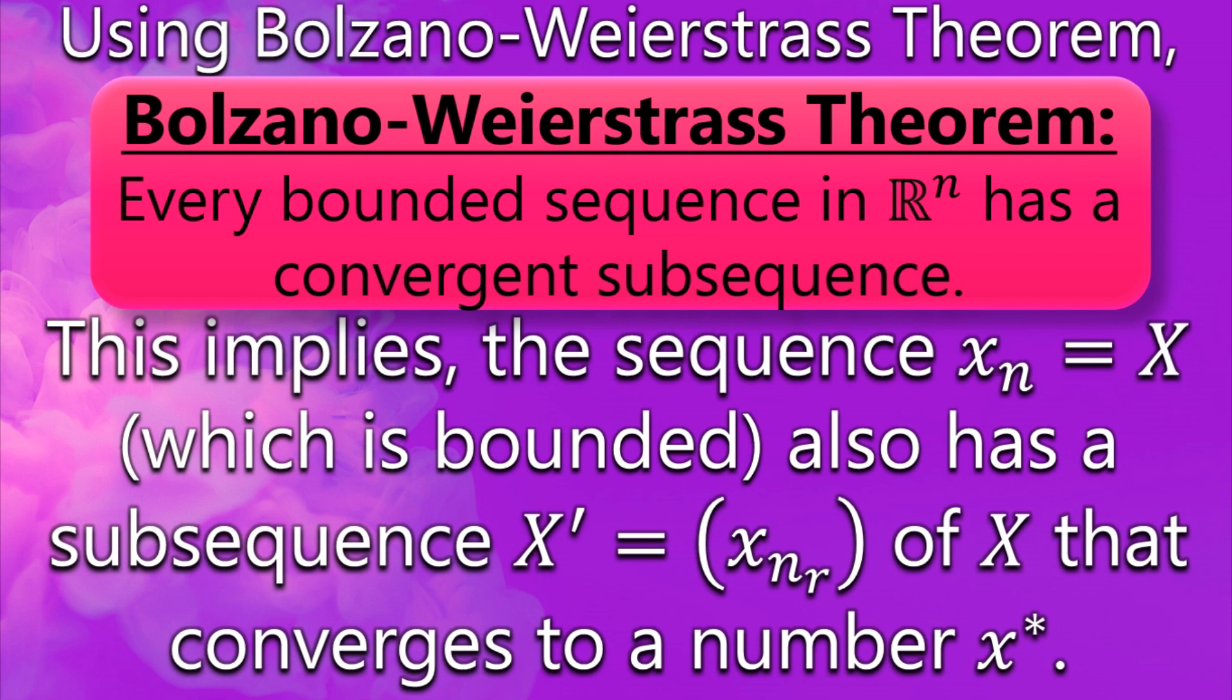X' and we call the elements of X' as x_{n_r} because they are the elements of X_n. And this subsequence X' converges to a number or element x*. You can also call this number x, it doesn't matter, but ultimately we will prove that this x* is our absolute maximum. That's why I've used this notation.